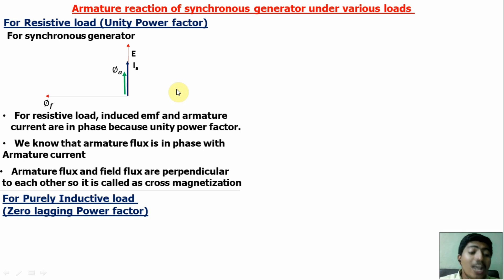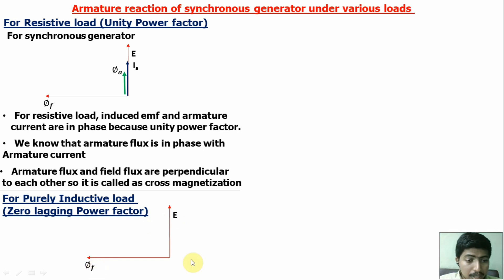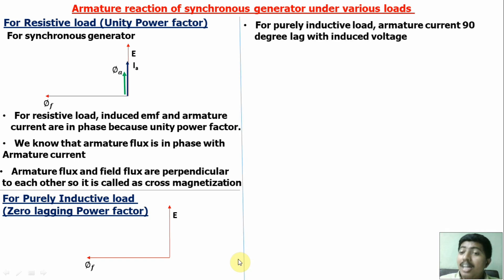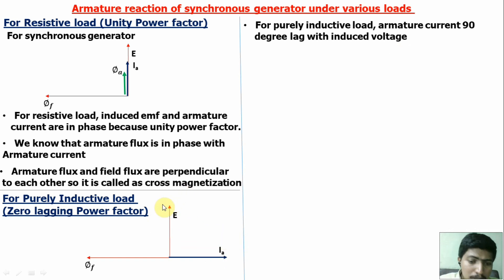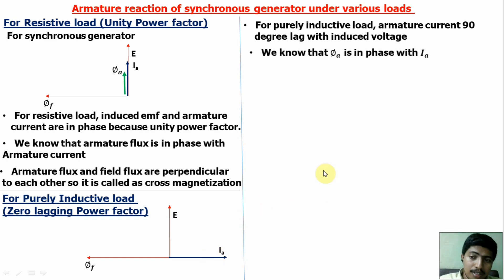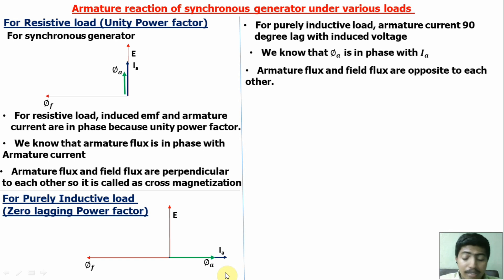For a purely inductive load — zero lagging power factor — the phase angle between induced EMF and field flux is 90 degrees. For a purely inductive load, armature current lags the induced voltage by 90 degrees. Since armature flux is in phase with armature current, the field flux and armature flux are opposite to each other. The resultant flux will be decreased, so this effect is called demagnetization.